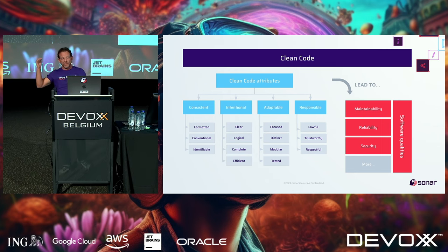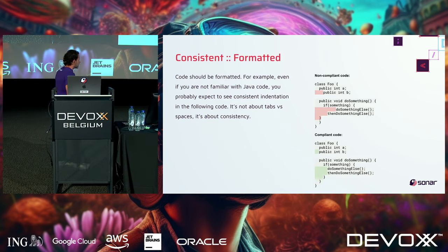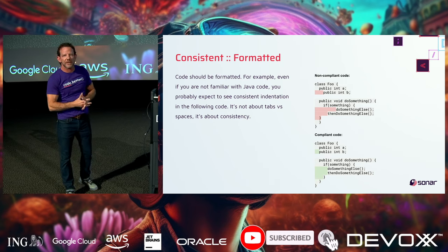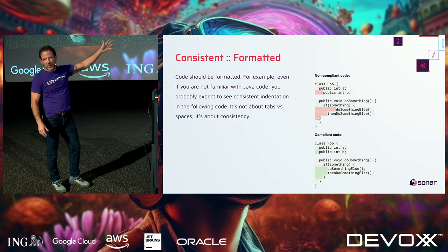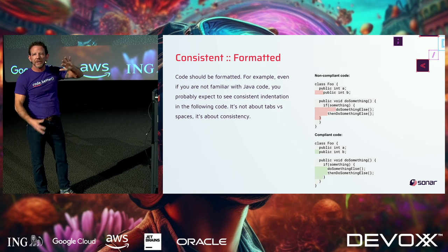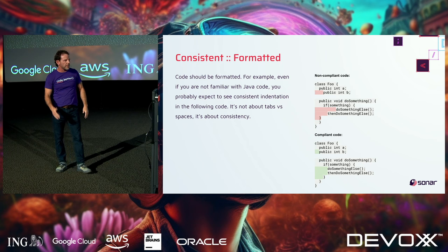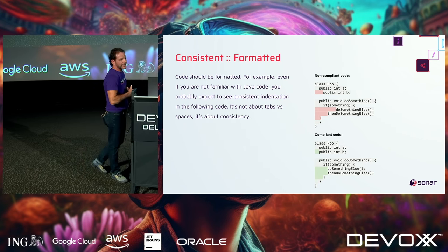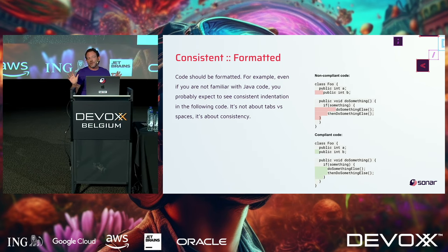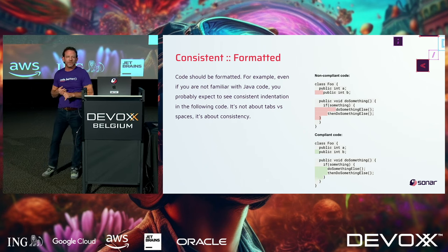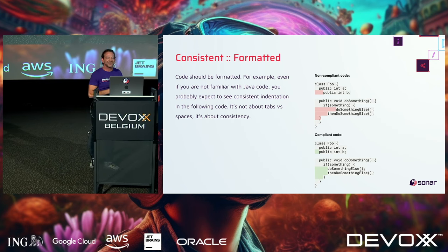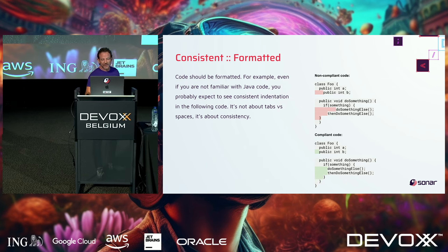Clean code is consistent, intentional, adaptable — leading to maintainability, reliability, and security. Starting with consistent: clean code is well-formatted. It's easy to see problems in a small code example, but imagine a full screen of code with inconsistent tabbing and spaces — it really taxes your brain. If code is lined up and consistently formatted, it's a lot easier to reason about. We don't care whether you use spaces or tabs — just pick one and use it across your project. Be consistent.